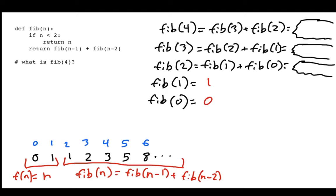Now that I've solved the base case, I can work my way back to what I originally care about: Fibonacci of 4. Fibonacci of 1 is 1, Fibonacci of 0 is 0, so Fibonacci of 2 is 1 plus 0, which is 1. That tells me what Fibonacci of 2 is. And then Fibonacci of 1 is 1, so Fibonacci of 3 is going to be 2. Now I know Fibonacci of 3 is 2 and Fibonacci of 2 is 1, so the answer is that Fibonacci of 4 is 3.